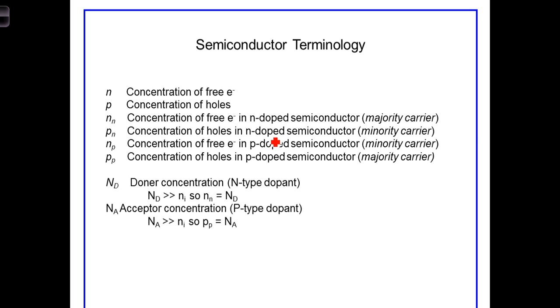even though the semiconductor is doped with N-type dopant, which means there's plenty of free electrons floating around. But the holes in an N-type semiconductor are referred to as a minority carrier.